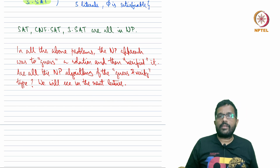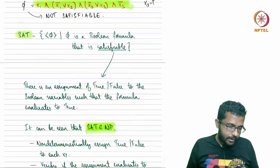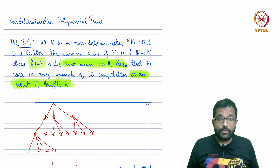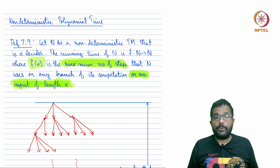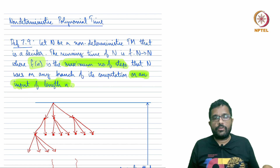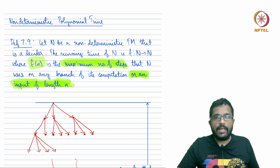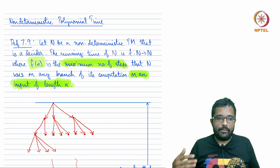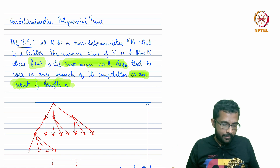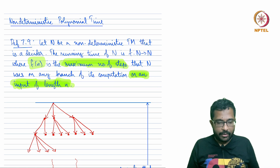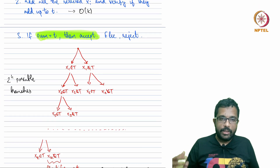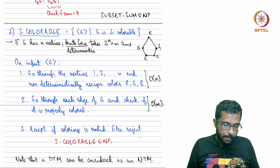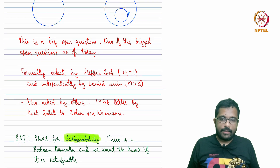This concludes lecture 46 and week 9. During week 9, we completed computability theory by covering the Post Correspondence Problem and showing it is undecidable to determine whether a given context-free grammar is ambiguous. We then began complexity theory, defining time complexity classes, P, NP, and examples of languages in P and NP. We will continue with P, NP, and time complexity theory in week 10.